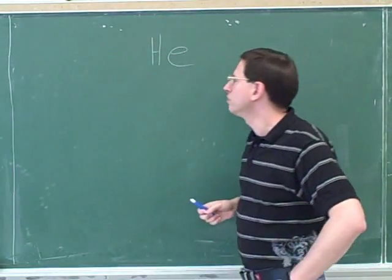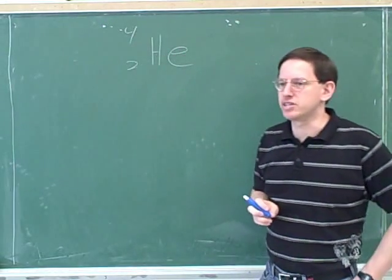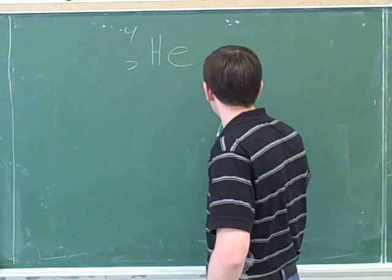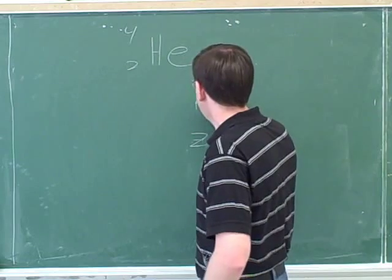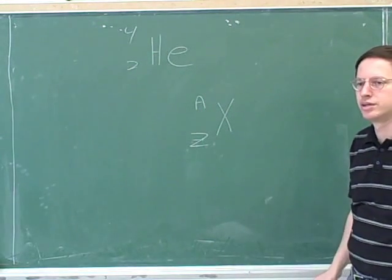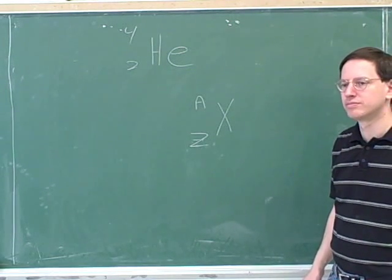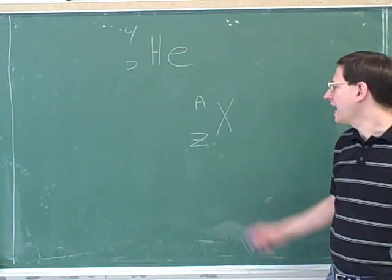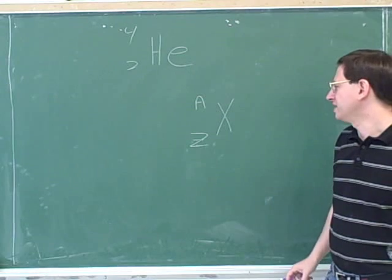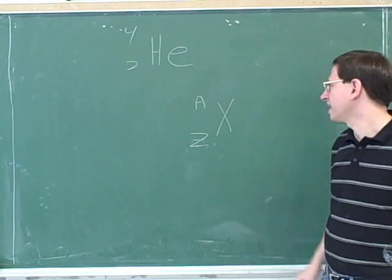When we're describing nuclei, we usually use this kind of symbology, so we need to know how to interpret this. Here's a specific example, and here's the generic example. X here just stands for an unknown element. In chemistry, X is usually a halogen, but in nuclear physics, X is any unknown element. It doesn't have to be a halogen.